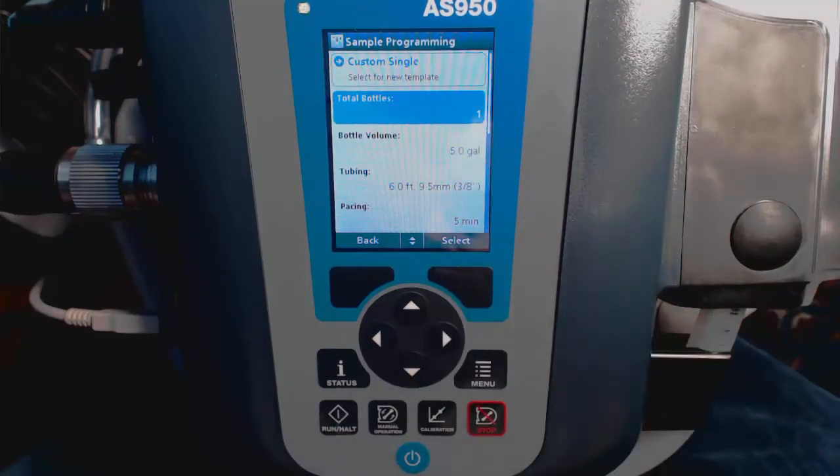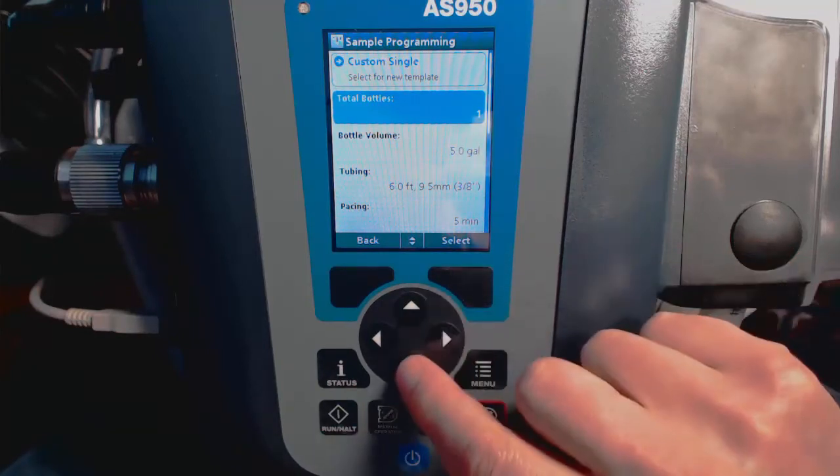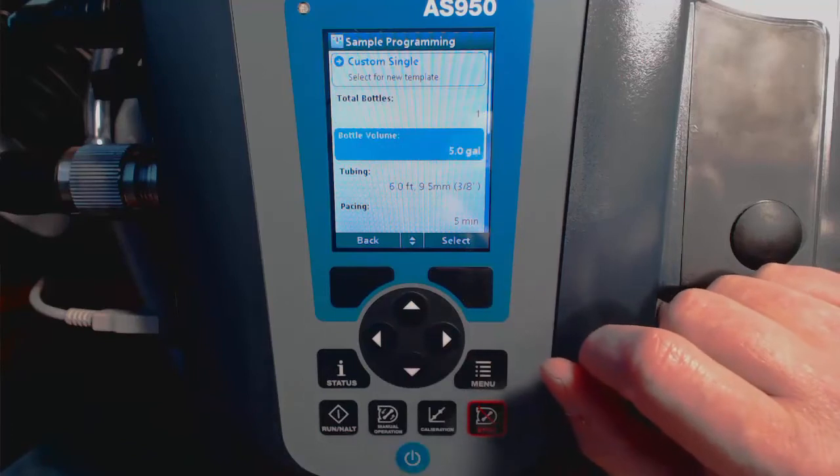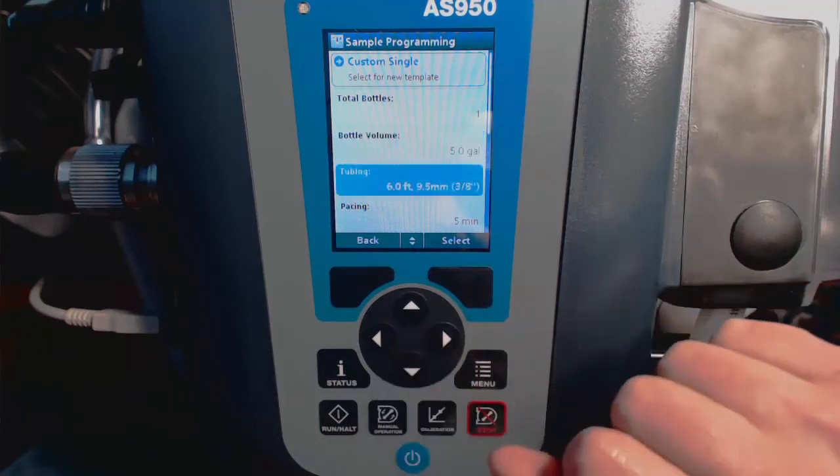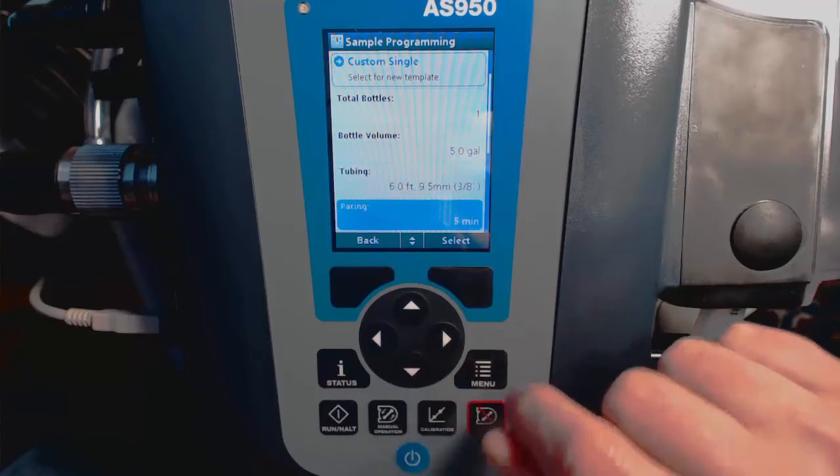Now we'll select the number of bottles. The bottle volume. The tubing length and diameter.